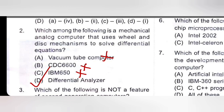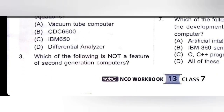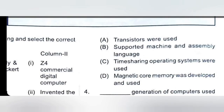Which of the following is not a feature of second generation computers? The features are: transistors were used — correct; supported machine and assembly language — correct; time sharing operating systems were used — this is wrong, not correct, so C is the right option; magnetic core memory was used — this is correct. So time sharing operating systems were used is wrong.